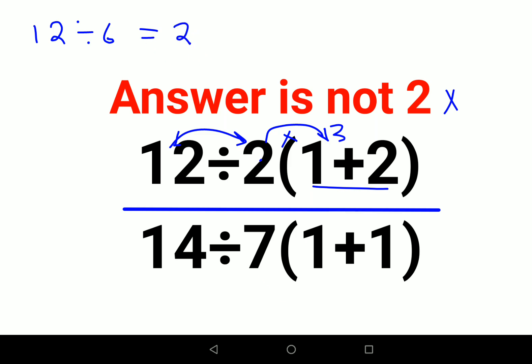And in your denominator, you multiplied 7 with the bracket, which is 14. So 14 divided by 14 gets you 1. So 2 upon 1, answer comes out to be 2.